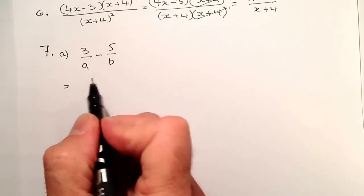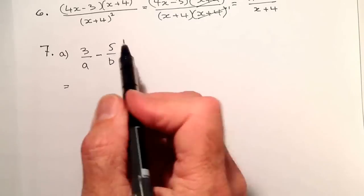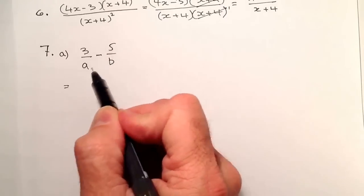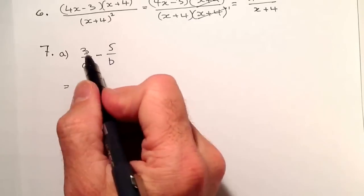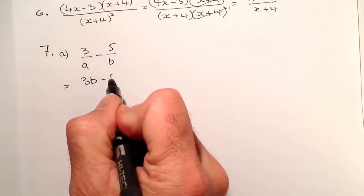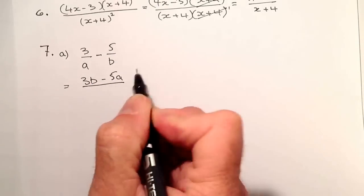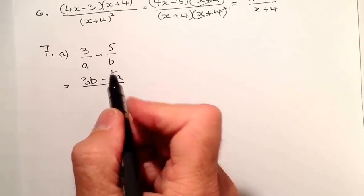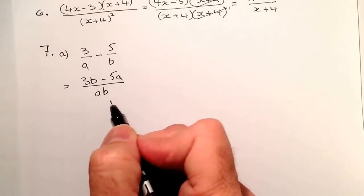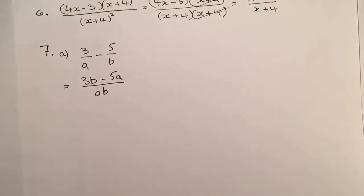So what I'm going to do here is multiply this side by B, I'm going to multiply this side by A. So I'm multiplying by the opposite denominator. So 3B minus 5 times A will give me 5A. And what I'm going to do is put it all across A times B, which is AB. I can't simplify that any further, so that's going to be my final answer for part A.